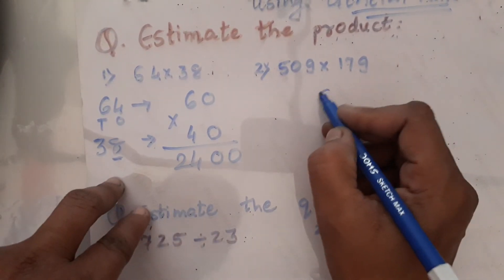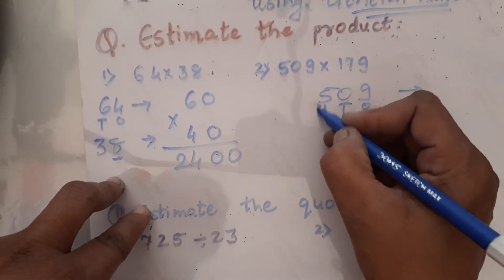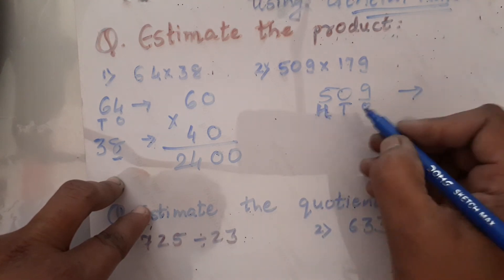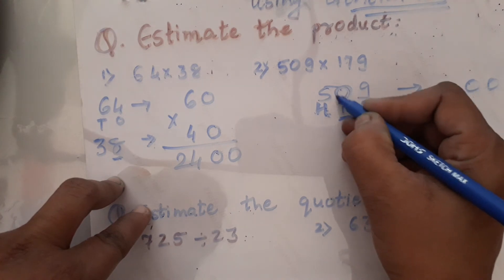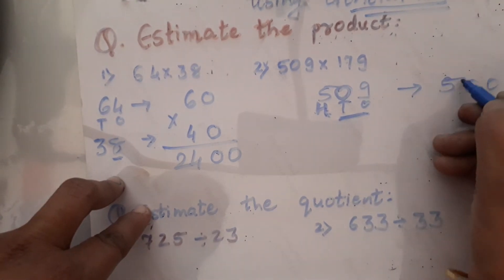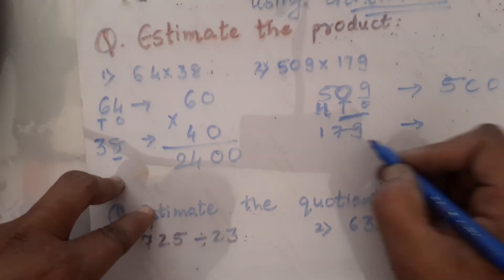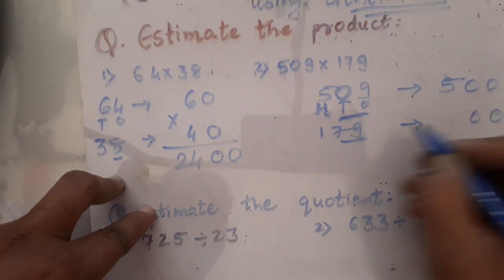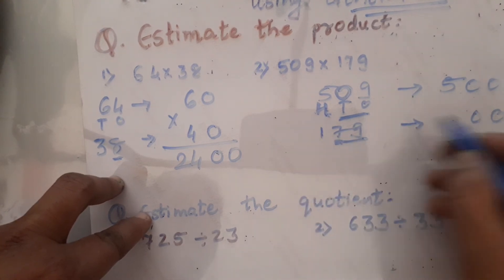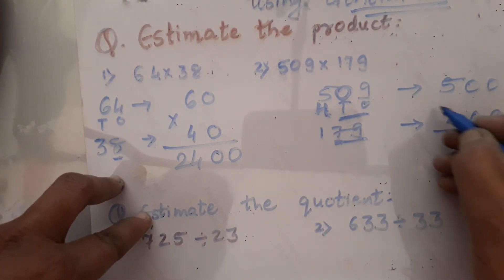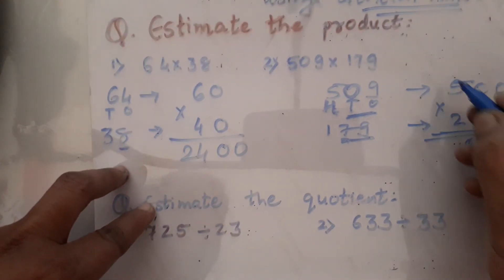Second example: 409 is a 3-digit number — round to nearest hundreds: 2 zeros, digit at higher place is 0 — condition not satisfied, so 5 remains as 500. 179 is also 3-digit — round to nearest hundreds: 7 satisfies the condition, so 1 plus 1 is 2, giving 200. Multiply: 500 times 200 — 4 zeros, and 5 times 2 is 10, giving 100,000.